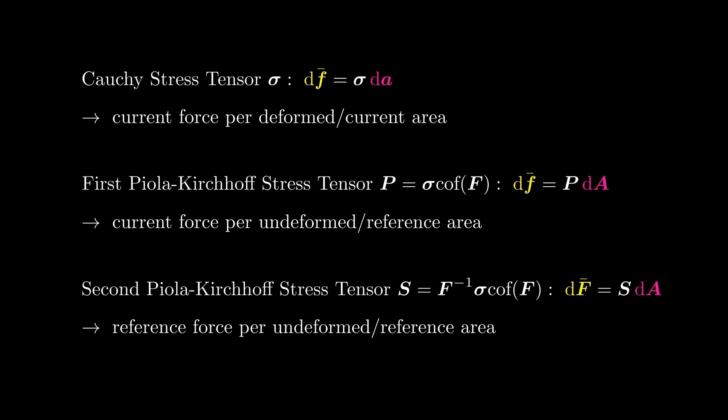To summarize: we introduced the Cauchy stress tensor sigma — the true stress — which gives the current force when multiplied by the deformed area element vector. Then we introduced the first Piola-Kirchhoff stress tensor P by mapping the undeformed area element vector to the deformed area element vector using the cofactor of the deformation gradient — P gives the current force when multiplied by the undeformed area element vector. Finally, we defined the second Piola-Kirchhoff stress tensor S, which gives the reference force when multiplied by the undeformed area element vector.